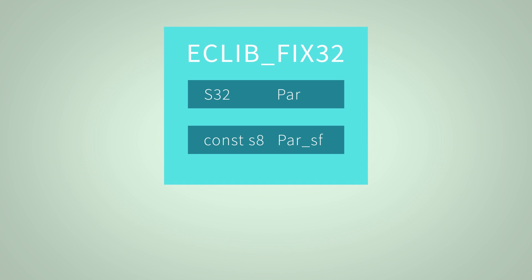To facilitate the handling of this pair of variables the data type eClibfix32 was introduced. This pair of variables enables the eClib functions to take over the handling of the resolution of the different variables and thus makes programming fixed point C code very convenient.